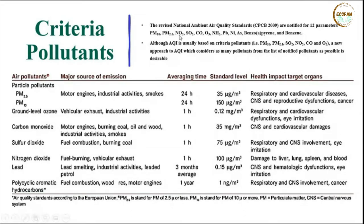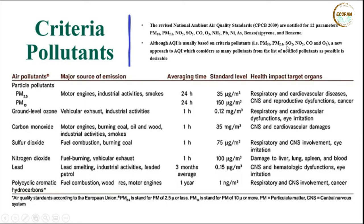The twelve criteria pollutants are: particulate matter PM10, particulate matter PM2.5, nitrous oxide, sulfur dioxide, carbon monoxide, ozone, ammonia, lead, nickel, arsenic, benzopyrene, and benzene. The National Ambient Air Quality Standards (NAAQS) have been notified by the CPCB for these pollutants. These pollutants also form the basis for calculating the Air Quality Index (AQI), which is calculated using PM10, PM2.5, sulfur dioxide, nitrous oxide, carbon monoxide, and ozone.